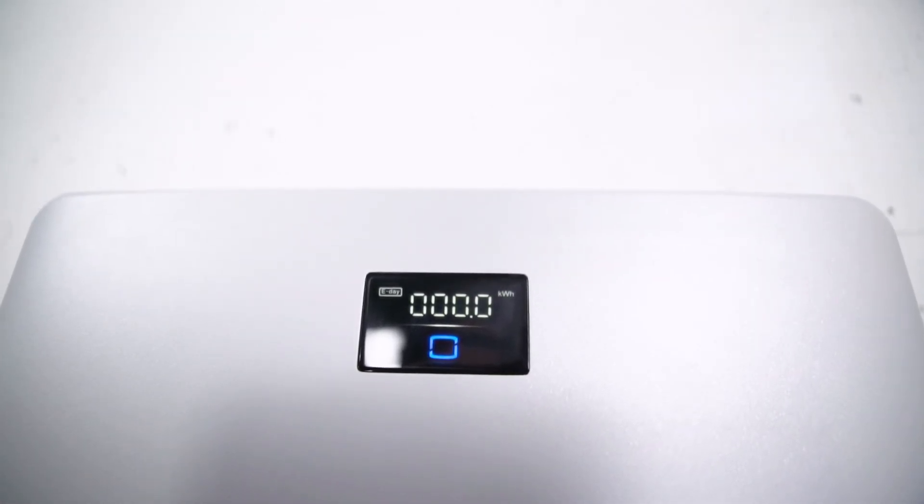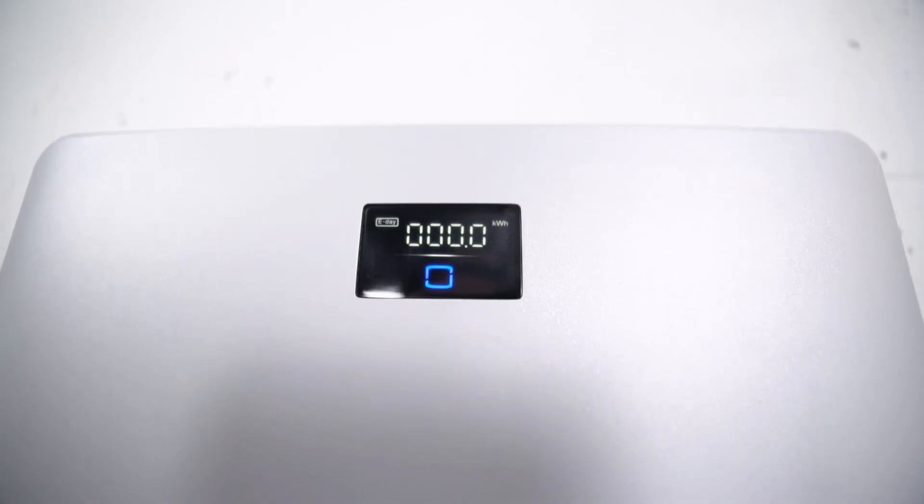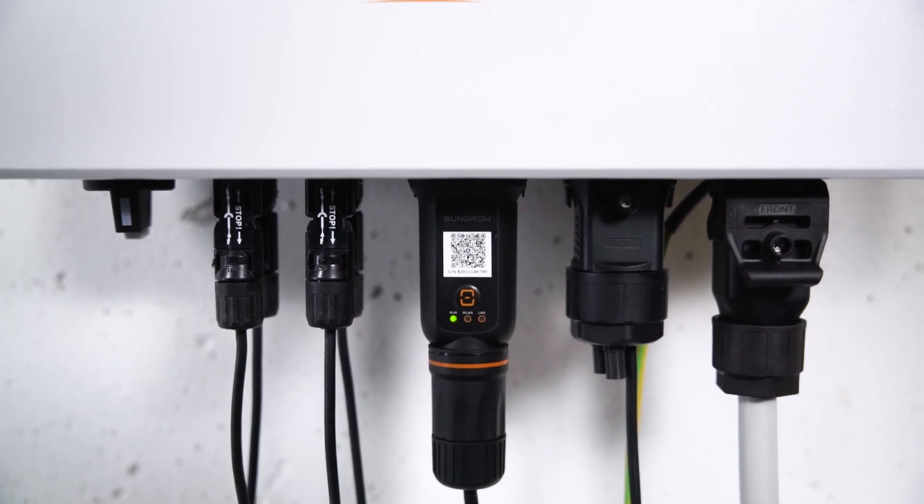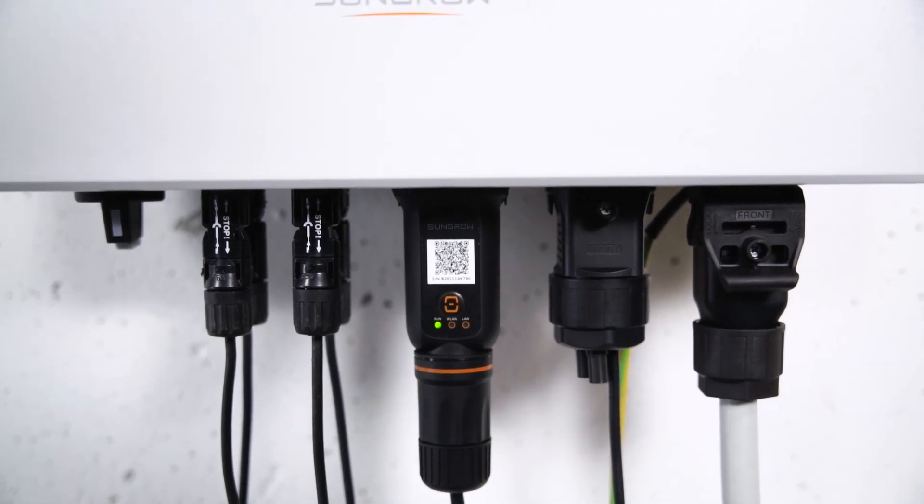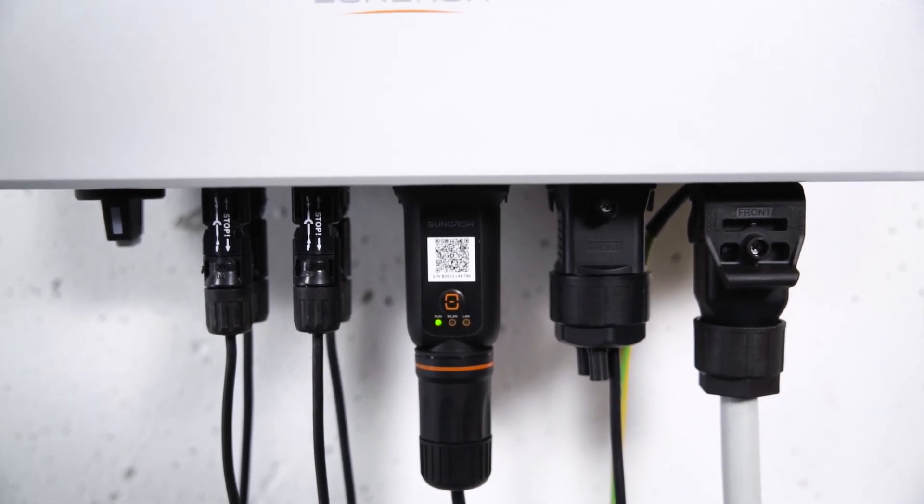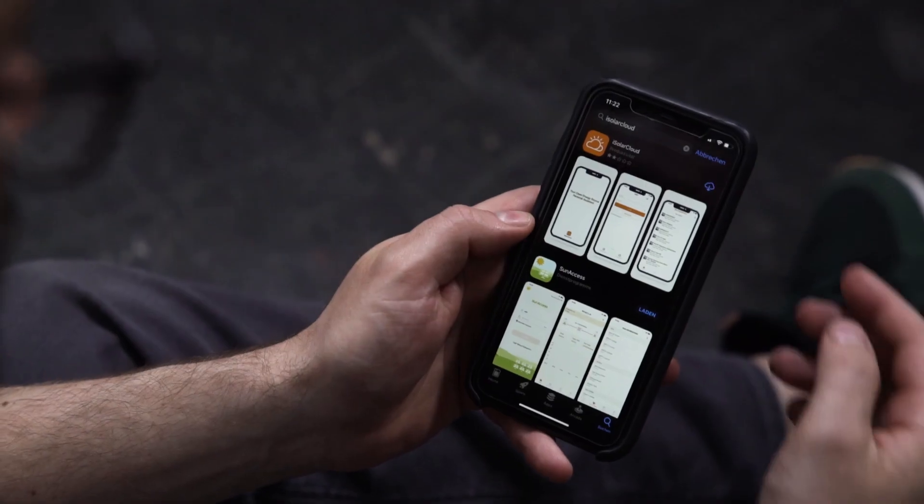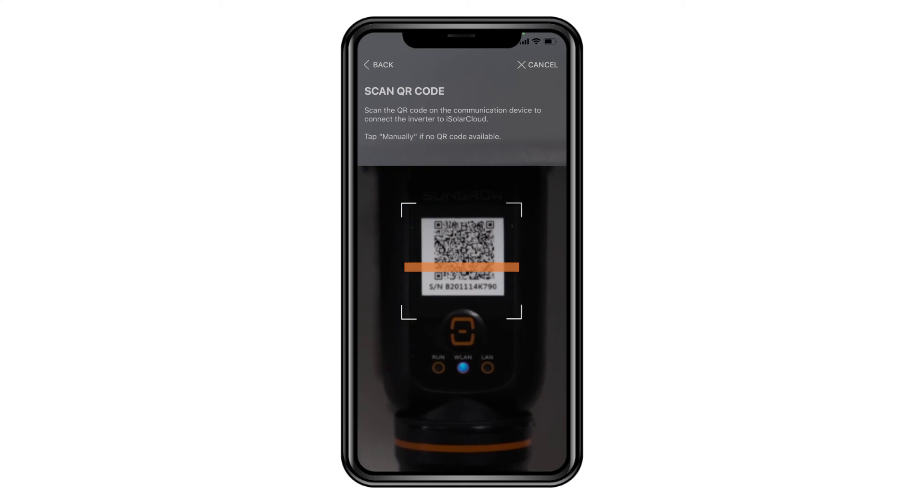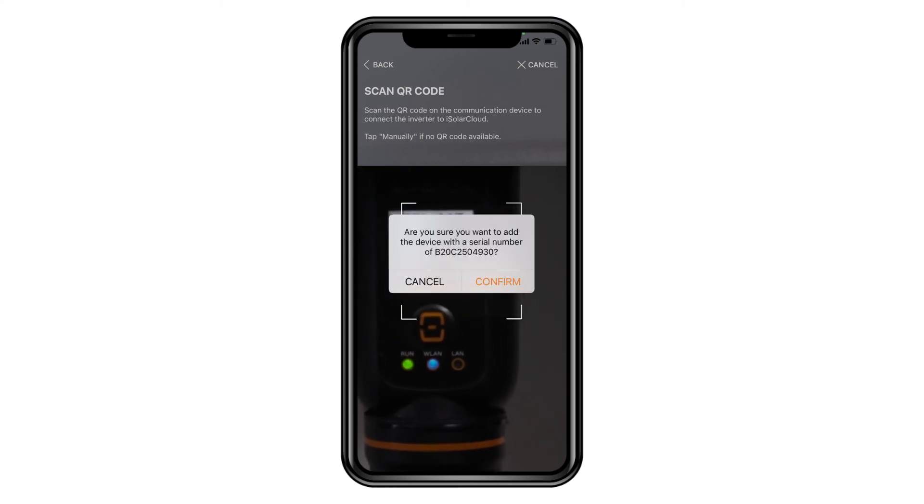If this is not the case, please refer to the manual where you will find a breakdown of the different light signals. When connected, the Wi-Net module takes some minutes to fully boot. To finalize the setup, you need to download the iSolar Cloud app. You may find a detailed commissioning video on our YouTube channel.